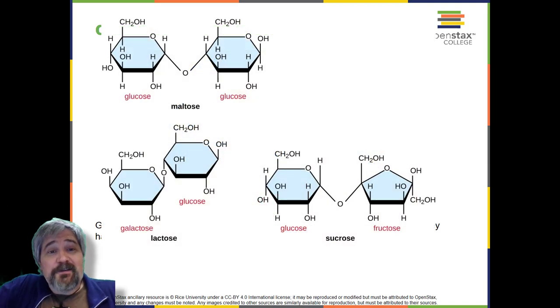Common disaccharides include lactose, maltose, and sucrose. Lactose is a disaccharide consisting of the monomers glucose and galactose. It is found naturally in milk. Maltose, or malt sugar, is a disaccharide formed from a dehydration reaction between two glucose molecules. The most common disaccharide is sucrose, or table sugar, which is composed of the monomers glucose and fructose. As an aside, maltose is a pretty good sugar to use when you're brewing.